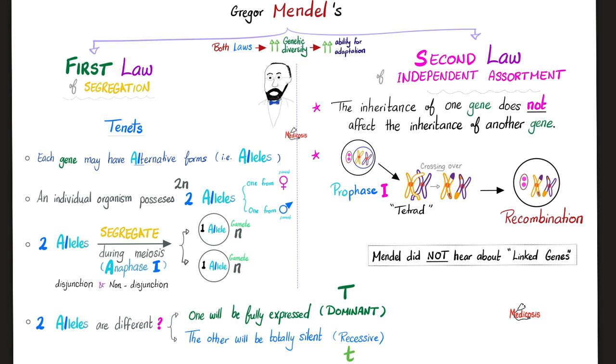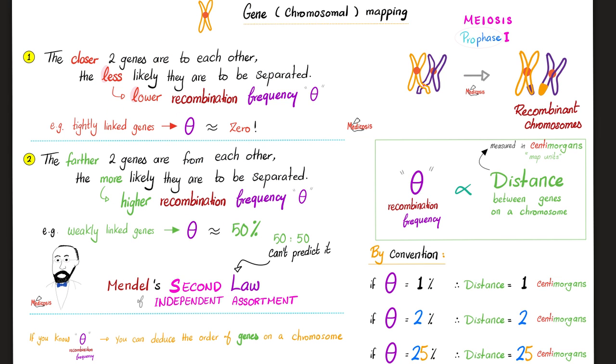And if you recall from previous videos, I've told you that Mendel did not hear about linked genes. But now you will hear about them. These are the linked genes. What the flip does that mean? Two genes that are very close to each other on the chromosome.